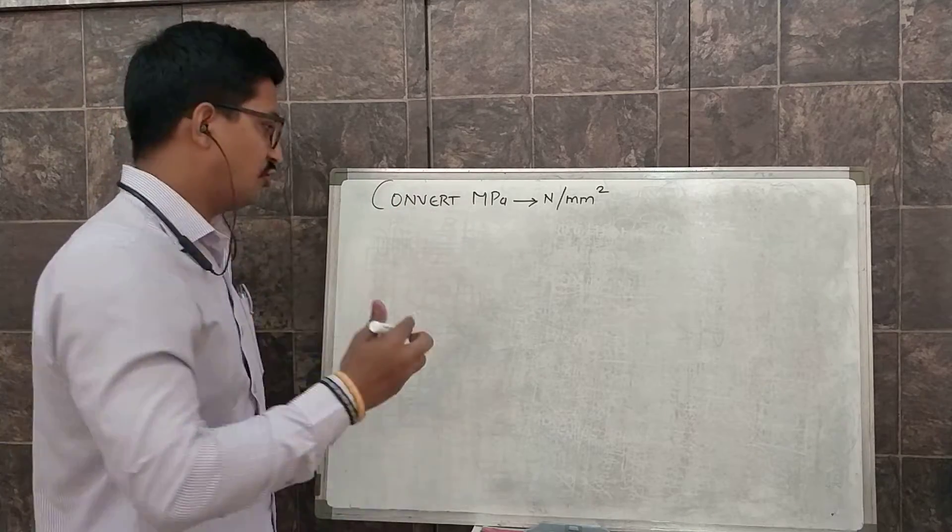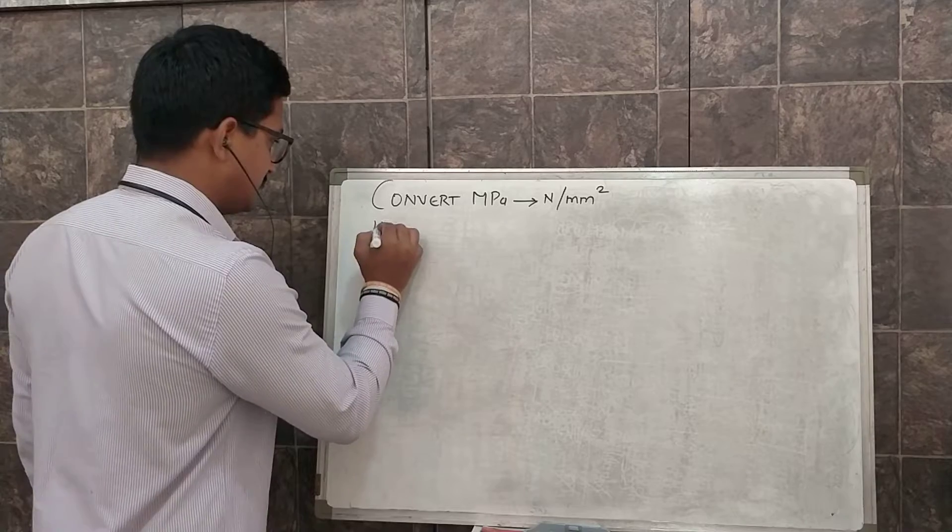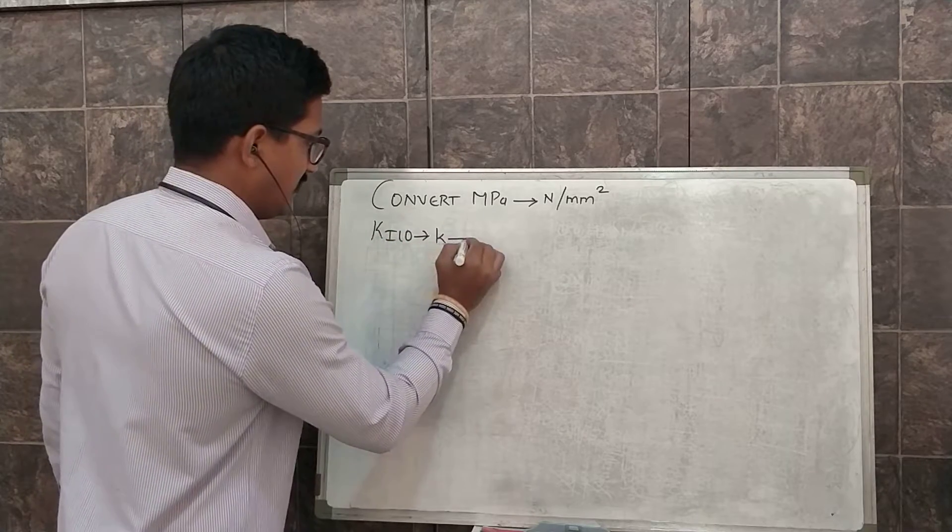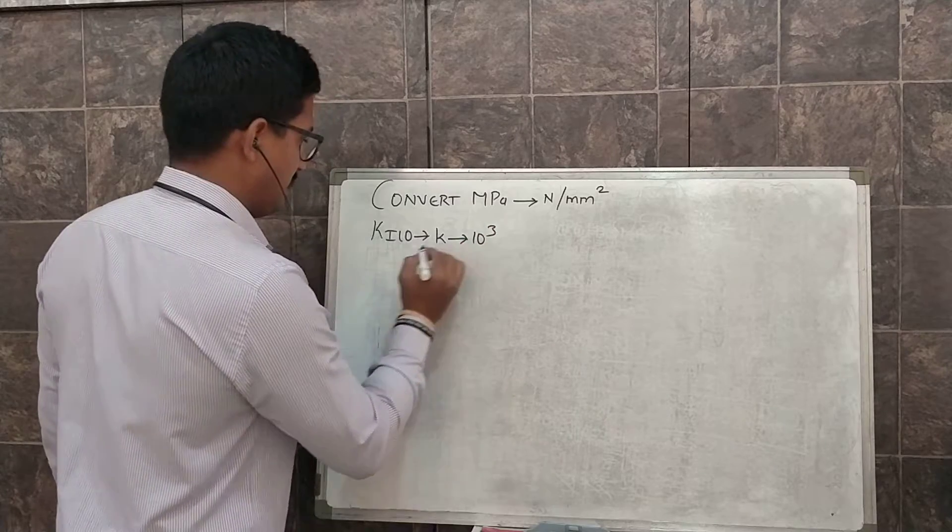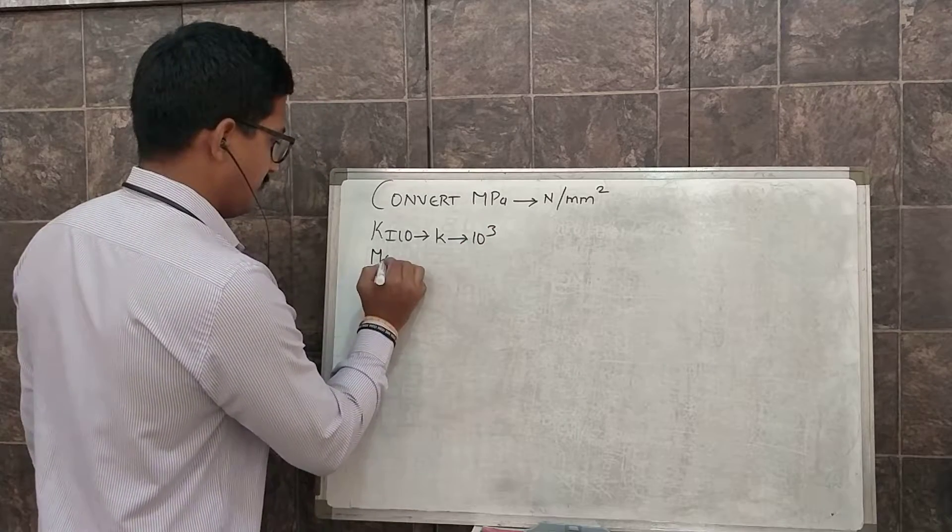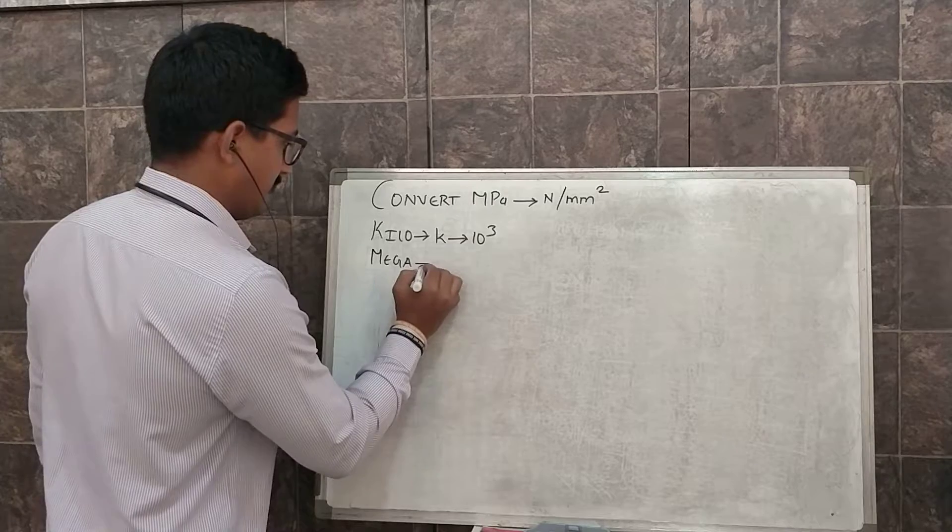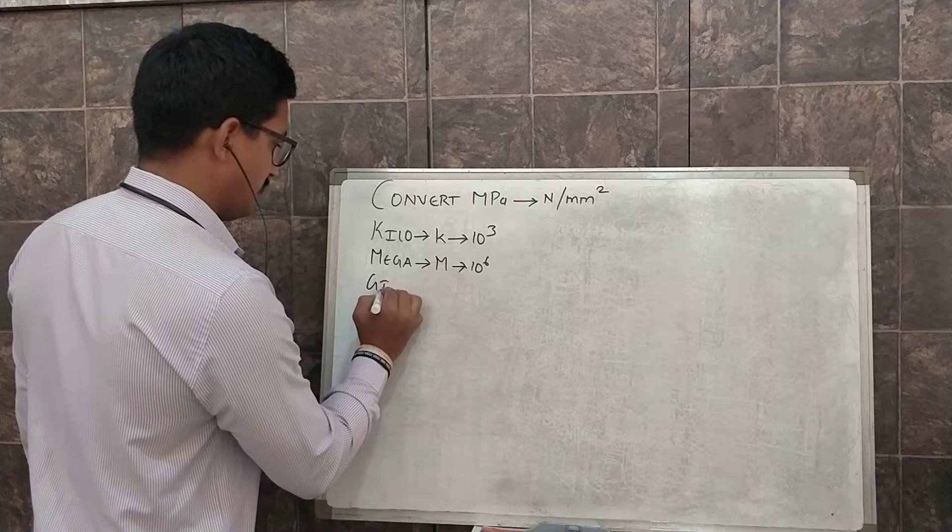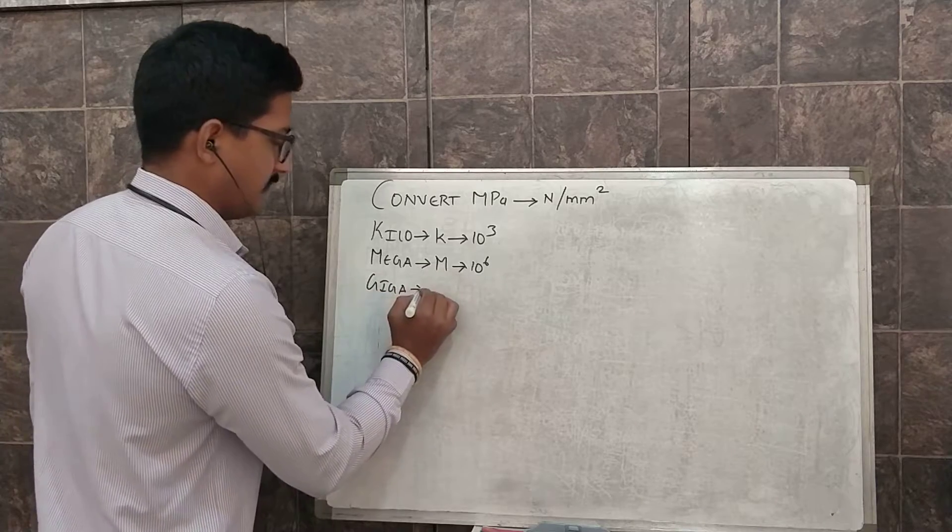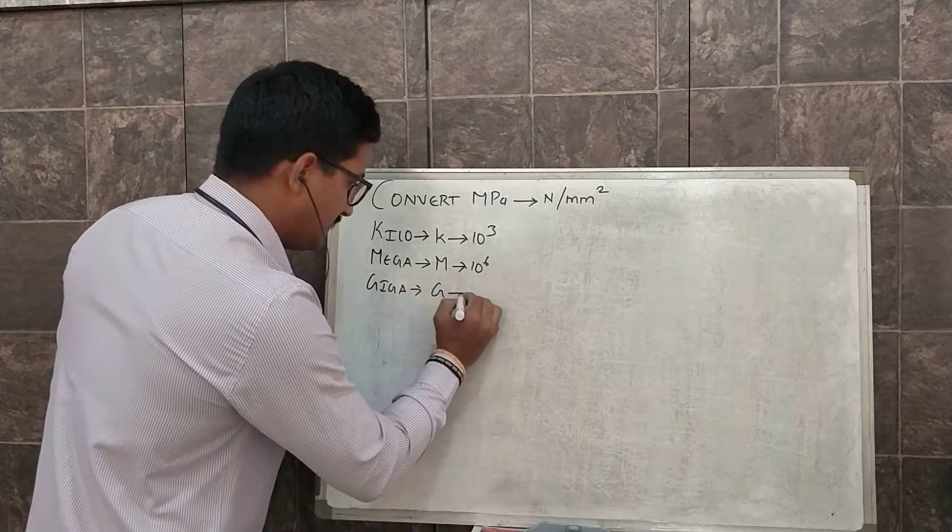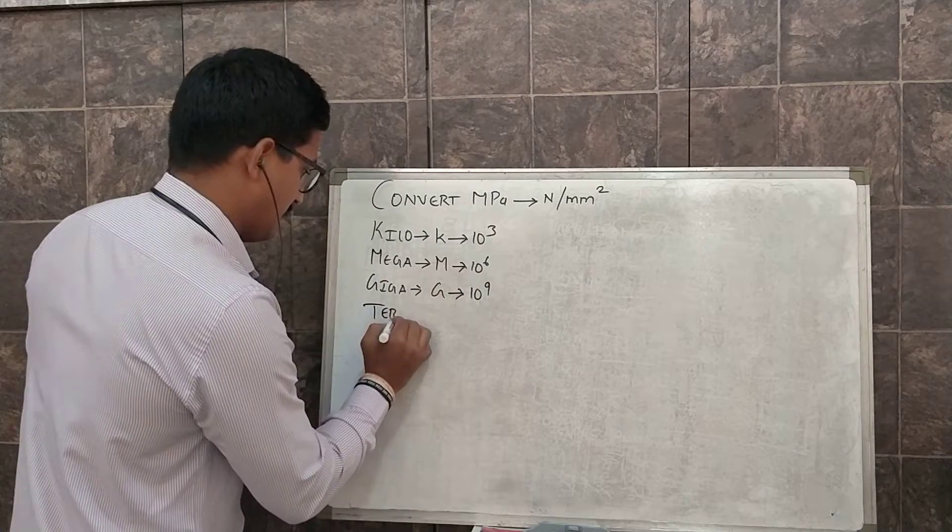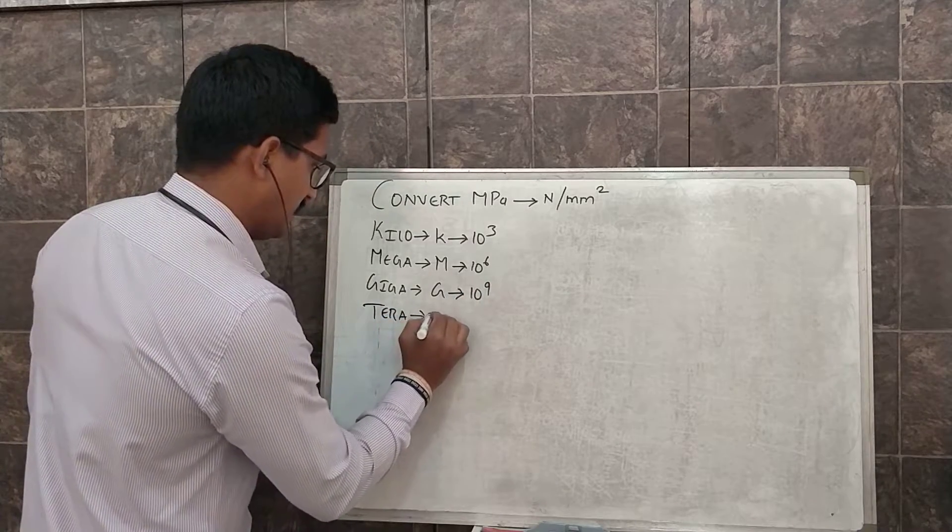First, kilo denoted by small k is 10 raised to 3, mega denoted by capital M is 10 raised to 6, giga denoted by capital G is 10 raised to 9, tera denoted by capital T is 10 raised to 12.